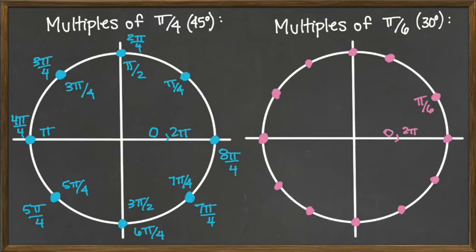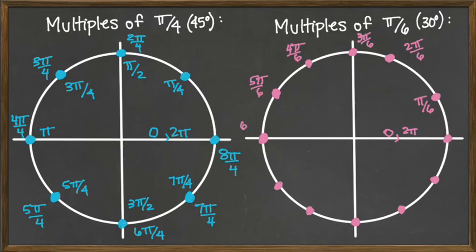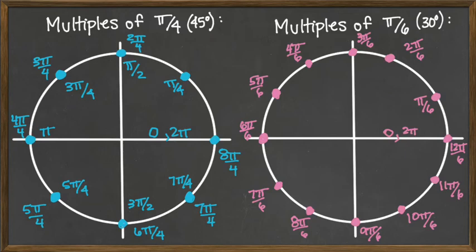With π/6 as our building block, we count the number of π/6's all the way around the unit circle. So we count: π/6, 2π/6, 3π/6, 4π/6, 5π/6, 6π/6, 7π/6, 8π/6, 9π/6, 10π/6, 11π/6, and 12π/6. It really is as easy as counting 1 to 12, just like the previous circle was counting 1 to 8. Then the last step is to reduce the ones that need reducing.